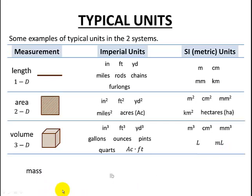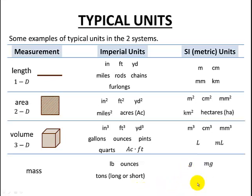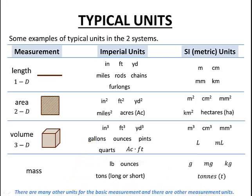Now let's take a look at mass — that's when we're weighing something. In the Imperial system, we have pounds (LB is the abbreviation), ounces, tons, and we have long and short tons, and we have to know when we're dealing with one or the other. In the metric system, we have grams, milligrams, kilograms, and metric tons, spelled T-O-N-N-E-S, or abbreviated T. So for tons, we need to differentiate not just between metric and Imperial, but also within Imperial — long and short. Remember, there are many other units throughout the course.